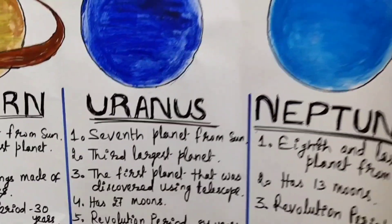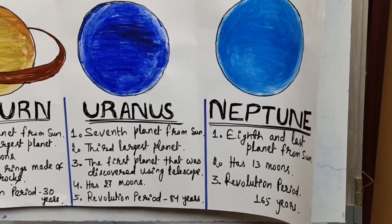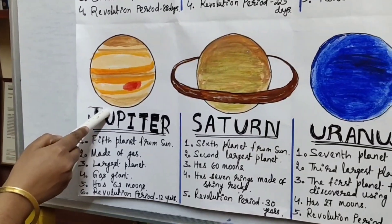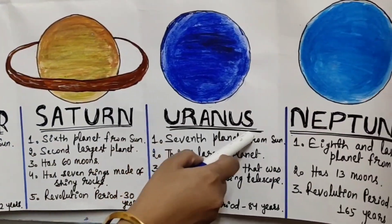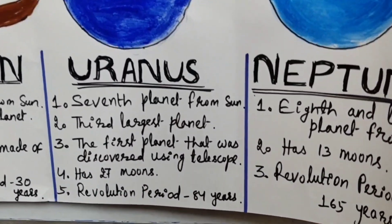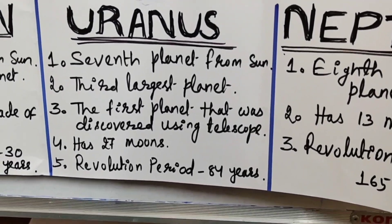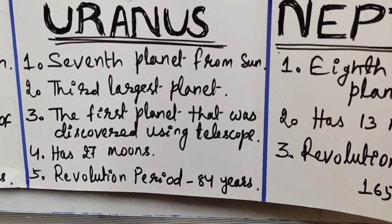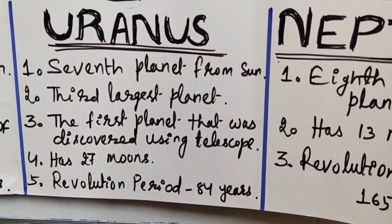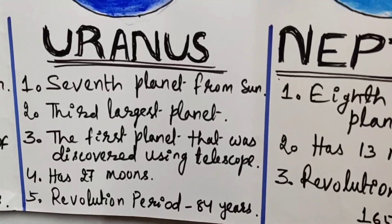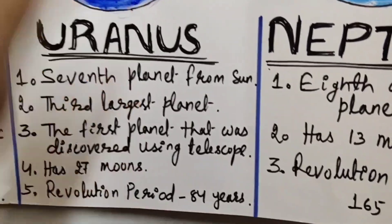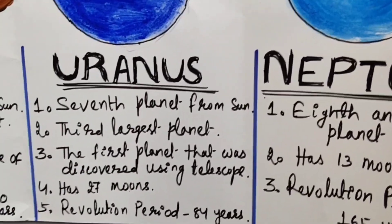Now Uranus — it is the seventh planet from the sun and the third largest planet. So the order is: first Jupiter, second Saturn, third Uranus. It was the first planet to be discovered using a telescope. It has 27 moons and a revolution period of 84 years.